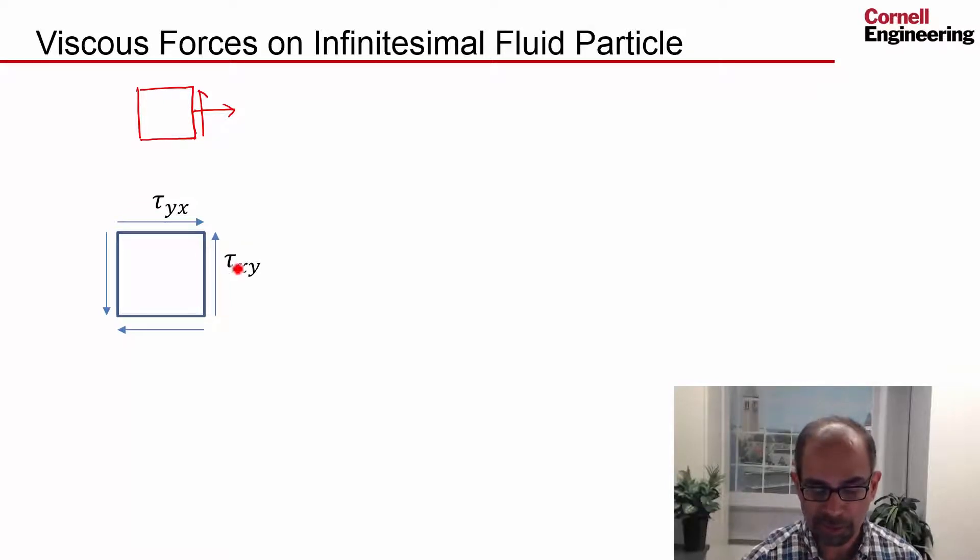Because now you have to worry both about the plane on which the force is acting as well as the direction. The plane is given by the normal, so the normal is in the x direction here, normal to the plane—that's why you denote this as tau xy, and correspondingly this will be tau yx. And if you do rotational equilibrium, you can show that tau xy is equal to tau yx. So you can replace both of these and just call it tau xy for the shear.